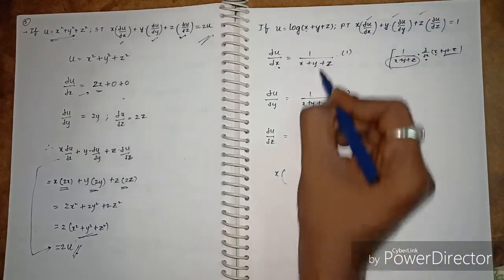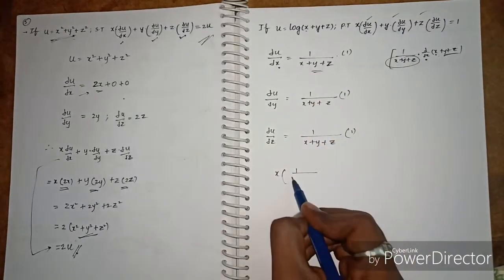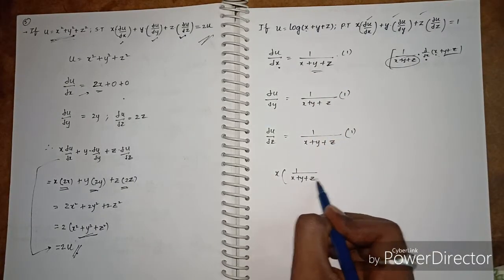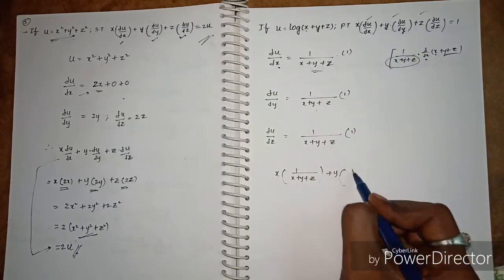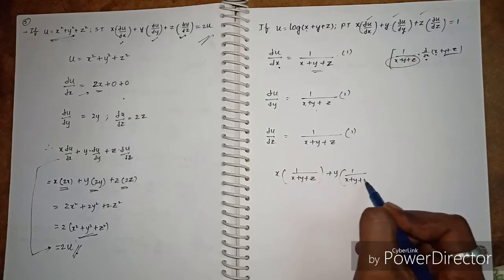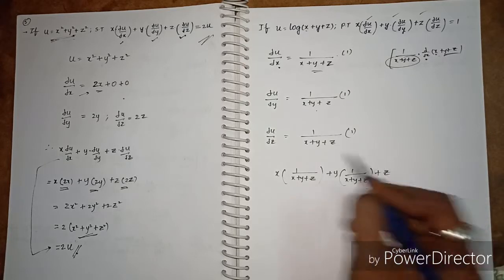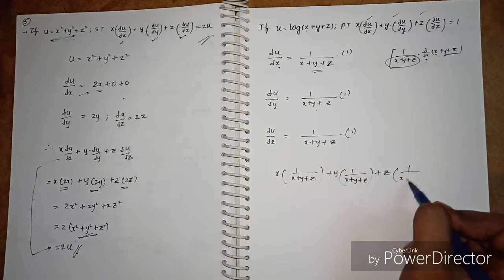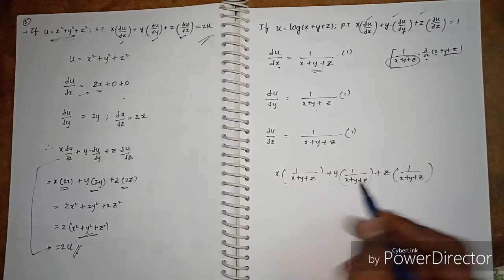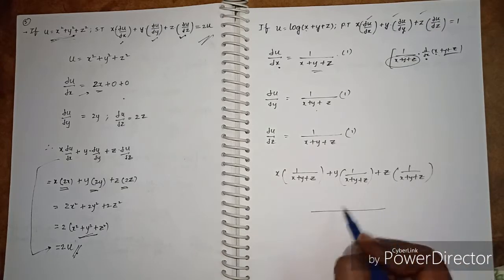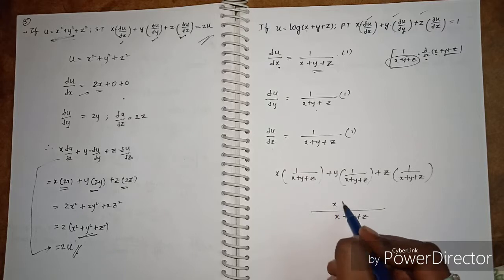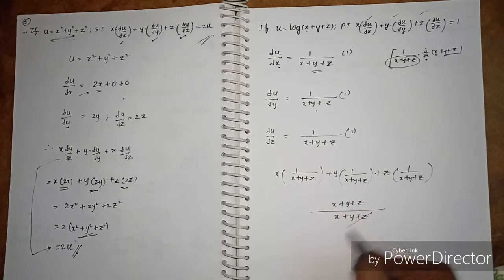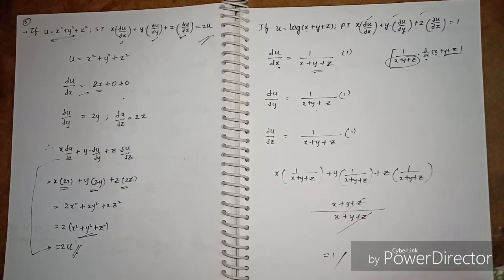Substituting: x·∂u/∂x = x/(x + y + z), plus y·∂u/∂y = y/(x + y + z), plus z·∂u/∂z = z/(x + y + z). Adding them gives (x + y + z)/(x + y + z), which cancels to equal 1. Hence proved.